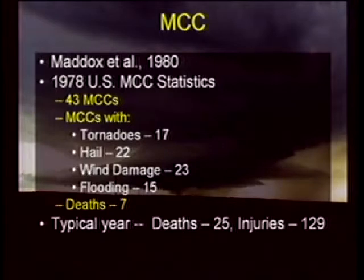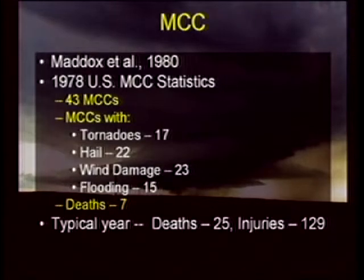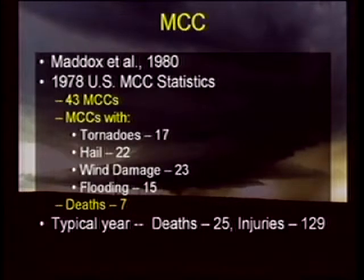Here are some statistics from Maddox in 1980. He looked at a number of MCC events and came up with some typical numbers from 1978. He suggested there were 43 MCC events, all defined by satellite imagery. Within those MCC events there were 17 tornadoes, 22 hail events, 23 wind damage events, and 15 flooding events. In fact, there were seven deaths that year. In a typical year there are 25 deaths attributed to storms associated with MCCs, and somewhere around 129 injuries as well. Flooding can be a real threat with these storms.